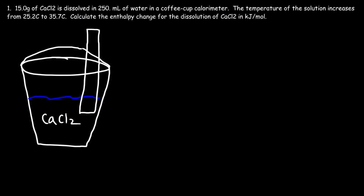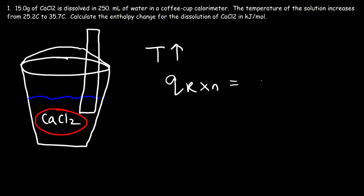The reaction will either generate heat or absorb heat, and the thermometer records temperature changes based on the surrounding solution. If the temperature of the solution increases, do we have an exothermic or endothermic reaction? All of the heat generated by calcium chloride will be absorbed by water, or the reaction can absorb heat from water. Either way, the heat absorbed or released by the reaction equals the heat absorbed or released by the surrounding water.